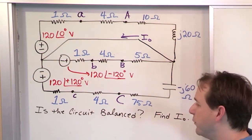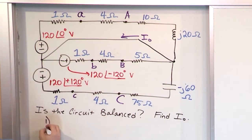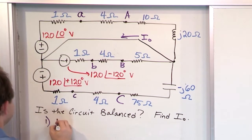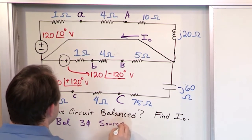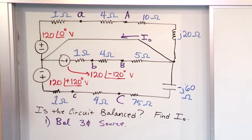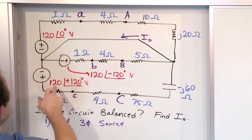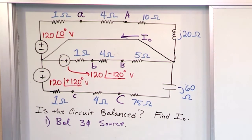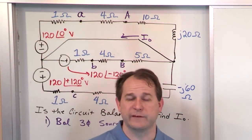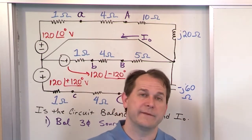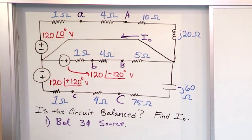So in this case we're trying to identify: is the circuit balanced? We have to go through a checklist. The first thing we need to figure out is, do we have a balanced Three-Phase Source? We need to check that the magnitudes of the A-Phase, the B-Phase, and the C-Phase are all the same. We don't list frequencies when we talk about phasors because we imply they're all the same — so that's check. The third thing is we need to check the phase angles and make sure they form a balanced Three-Phase Set.